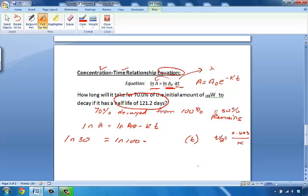This is the equation we use for half-life to find K. The half-life, we are told, is 121.2 days.